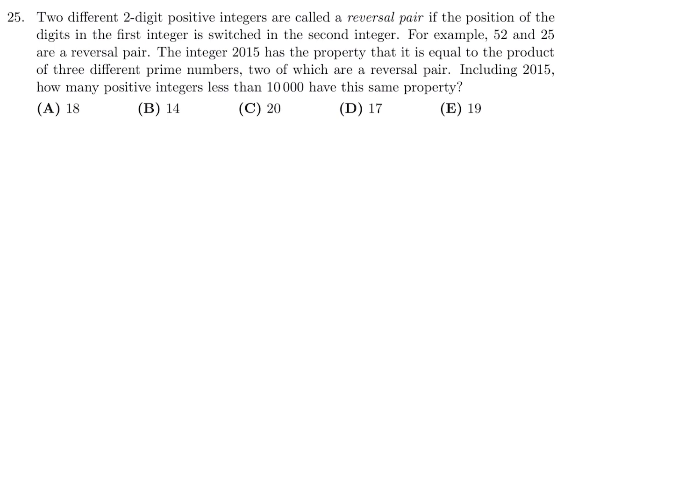Two different two-digit positive integers are called reversal pair if the position of the digits in the first integer is switched in the second integer. For example, 52 and 25 are a reversal pair. The integer 2015 has a property that it is equal to the product of three different prime numbers, two of which are a reversal pair. Including 2015, how many positive integers less than 10,000 have this property? Well, the first thing is just to look at 2015 when you break it up into prime factors. It's 5 times 13 times 31. And obviously, these are the ones that make up that reversal pair, 13 and 31.